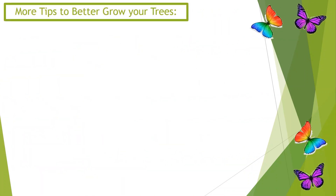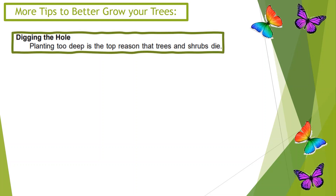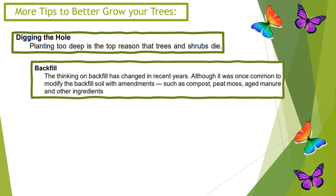More tips to better grow your trees. Tip 12: Digging the hole. Tip 13: Planting too deep is the top reason that trees and shrubs die. Tip 14: Backfill — the thinking on backfill has changed in recent years. Although it was once common to modify the backfill soil with amendments such as compost, peat moss, aged manure, and other ingredients.